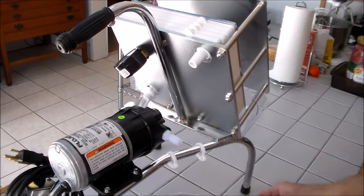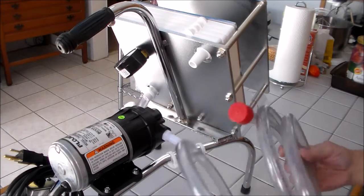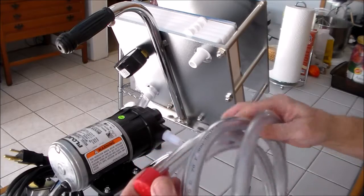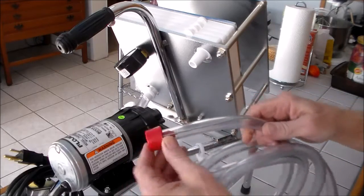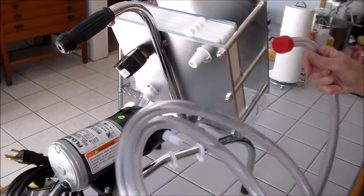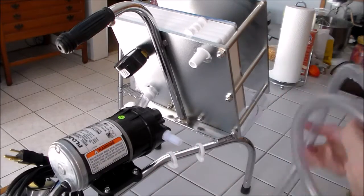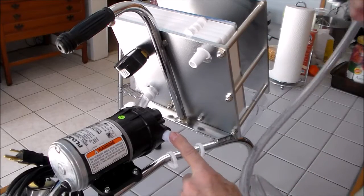This is a Buon Vino Superjet wine filter. And there's two hoses. This one, with the cup on it, is the intake. This will go into the carboy that you're going to filter. And this is the intake here.